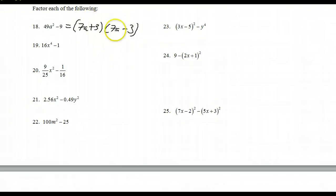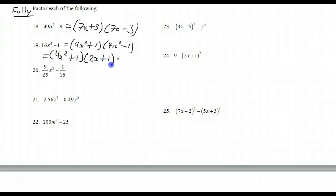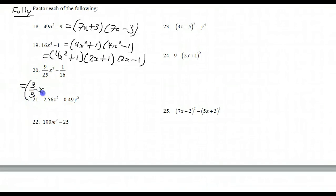Watch out for fourth powers — for 16x to the fourth minus 1, this is 4x squared plus 1 times 4x squared minus 1. But 4x squared minus 1 is also a difference of squares, so to fully factor: 4x squared plus 1 times 2x plus 1 times 2x minus 1. For the expression with 9 over 25 and 1 sixteenth: the square root of 9 over 25 is 3 fifths, so it factors as 3 fifths x plus 1 quarter times 3 fifths x minus 1 quarter. There can be no further difference of squares since there's no fourth power.